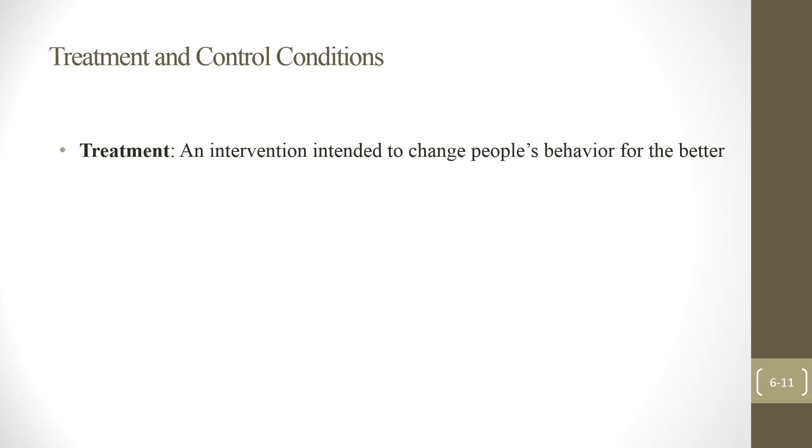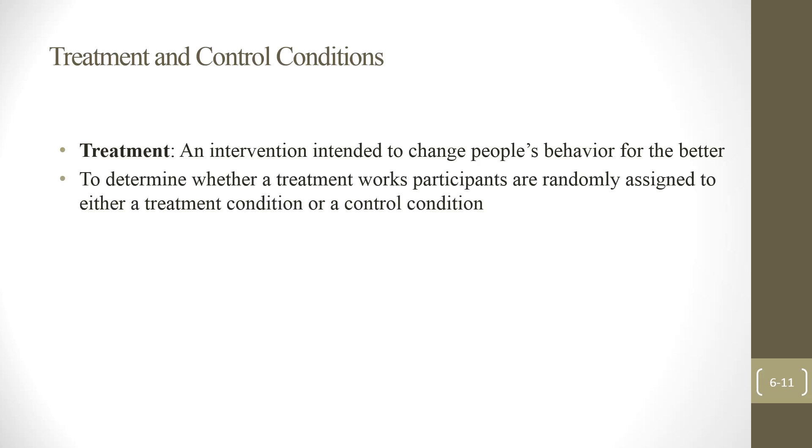Let's talk about treatment and control conditions. In the between-group experiment, sometimes we're not only doing an experiment, we're testing some type of treatment. Maybe drugs, medicine, or maybe some counseling method, teaching method, or for depression, anxiety, whatever. The treatment is an intervention intended to change people's behavior or mental status. To determine whether a treatment works, participants will be randomly assigned to either a treatment condition or control condition. At this point, you should know that already.